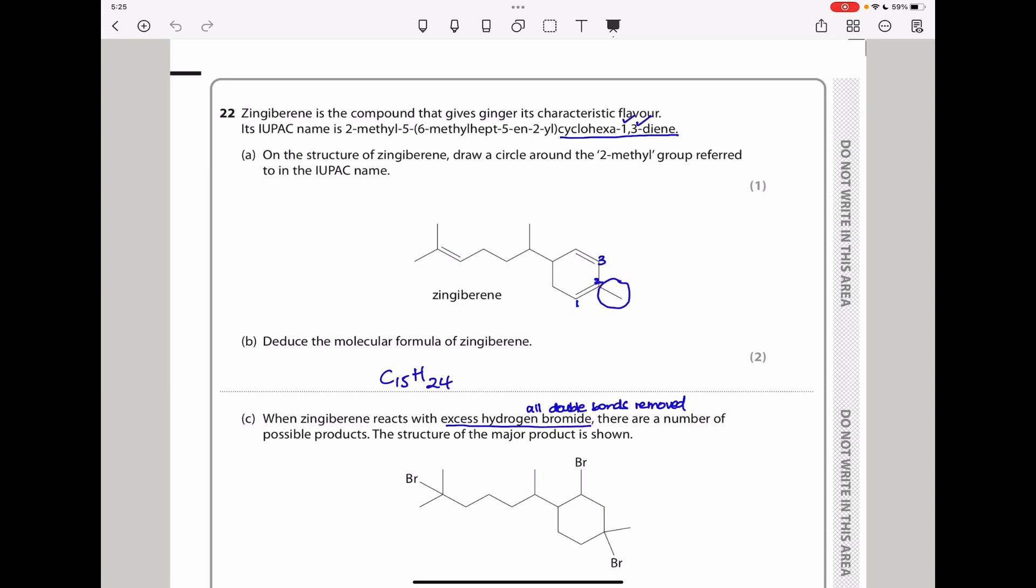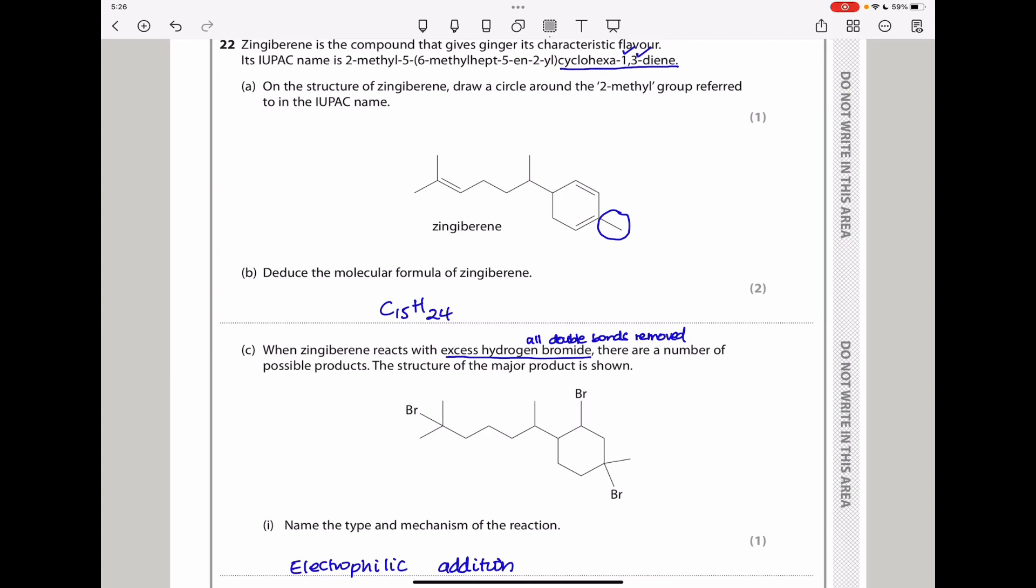Meaning there is a double bond on carbon-1 and a double bond on carbon-3. So that means this is the carbon-2. So that should be the methyl group we're referring to. The answer should be this part here. The next part says deduce the molecular formula of zingiberine. To do this, some students are really good at decoding it very fast, but if you cannot, please remember to position the carbons. You will avoid making mistakes. If you have enough time, try to position them and then put the hydrogens really fast where they should be.